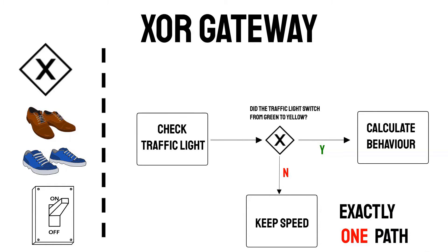The question based on an either-or gateway doesn't have to be a yes or no question — yes or no is just very simple to understand. This example is simplified of course, but I think this should explain the concept of either-or BPMN gateways pretty well. Let me know in the comment section below if this makes sense to you.